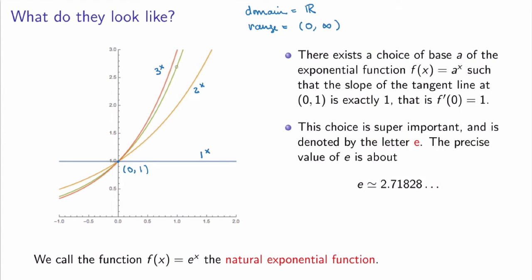There's a special choice of base — the green one on the graph. This is the choice of base such that the slope of the tangent line at the point (0, 1) is exactly equal to 1. You can in fact prove that such a choice of base exists. It is super important and it's denoted by the letter e. The actual value, which you can calculate, is something like 2.71828. The function e^x is called the natural exponential function — it's the nicest, most beautiful function ever, easy to deal with, and super important in mathematics.